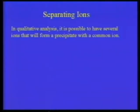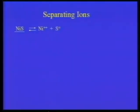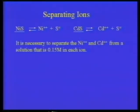The problem we were working with on separating ions deals with the fact that it is possible to have several ions that will form a precipitate with the same thing. Several things will form chloride ion precipitates — the plumbous ion, the mercurous ion, the silver ion. A number of things will form sulfides. What we were dealing with was a case of nickel and cadmium ions, both being present and both capable of forming insoluble sulfides. Suppose we have nickel ion and cadmium ion in solution, 0.15 molar in each.